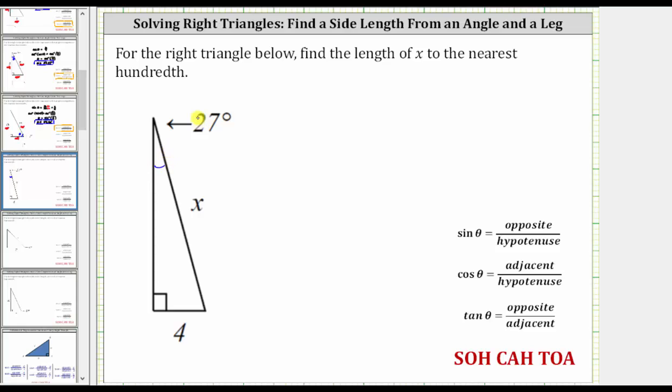So the next step, let's determine the opposite side, the adjacent side, and the hypotenuse in relation to the given angle of 27 degrees. Well, the opposite side is going to be this side here with a length of four units.